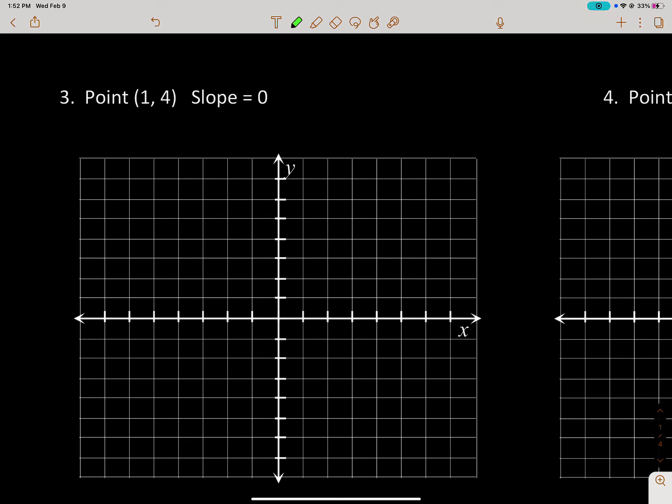All right, so number three: point (1, 4). I go right one and up four to get to that point. There's my first point. I need a second point. The slope is zero. What does slope of zero mean?